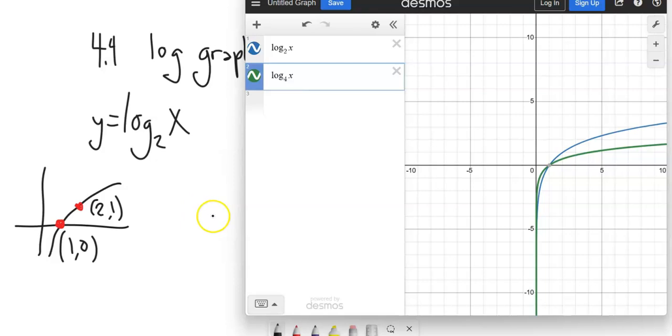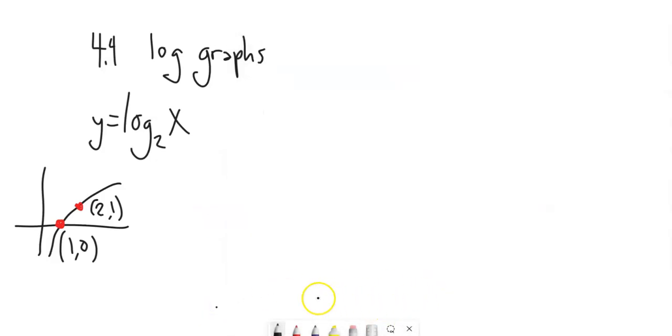So in general, we can talk about if this is a log base B, B for base, this point right here is going to be at (B,1). That gives us a good little bit of tools that we could use to sketch some of these.